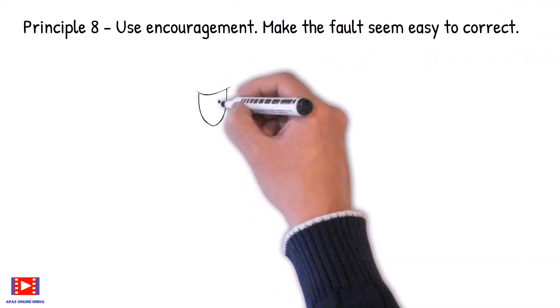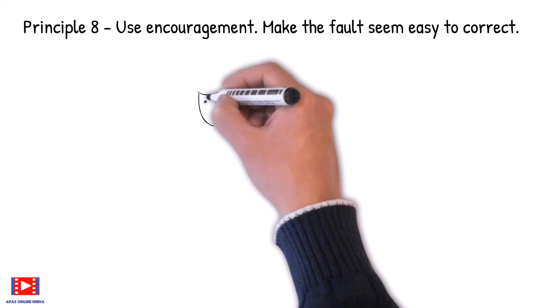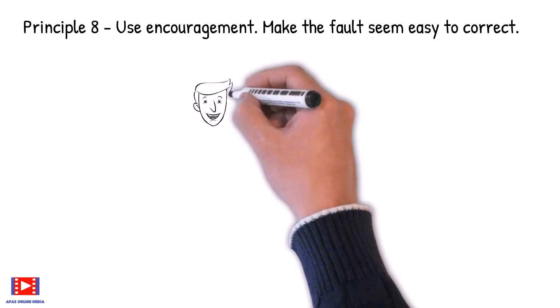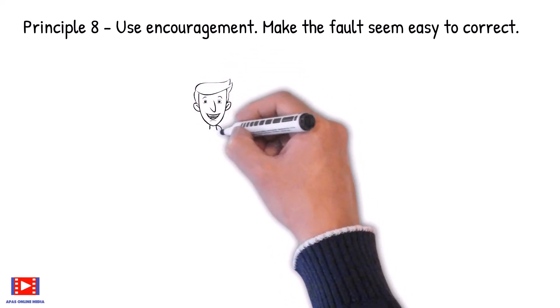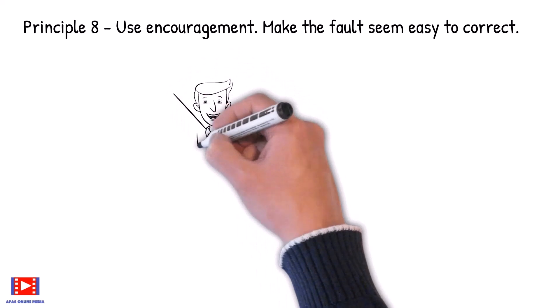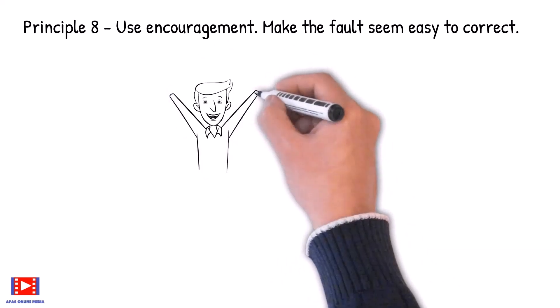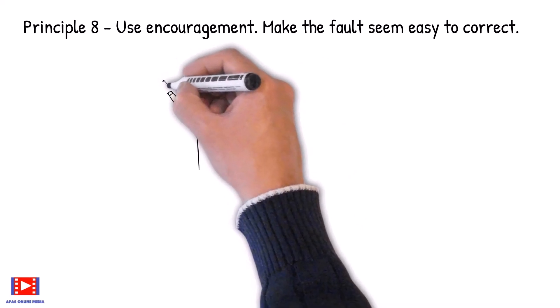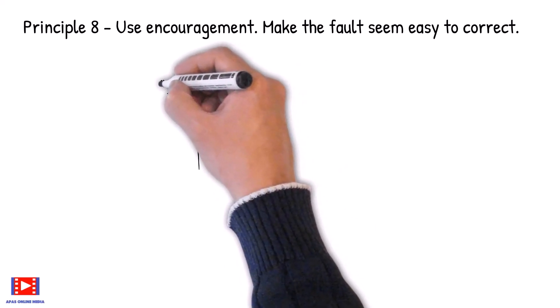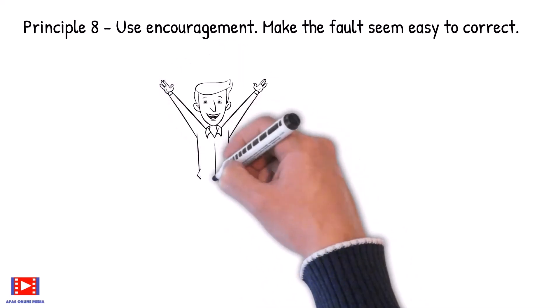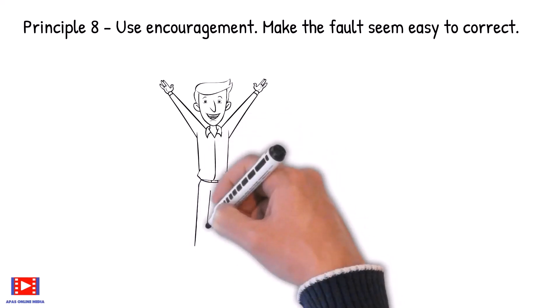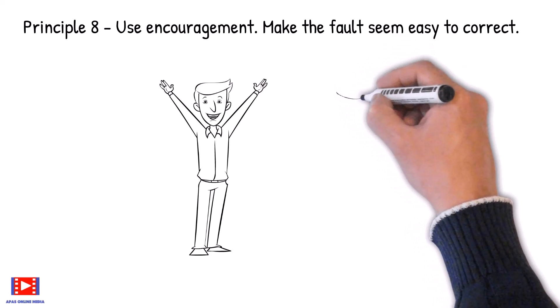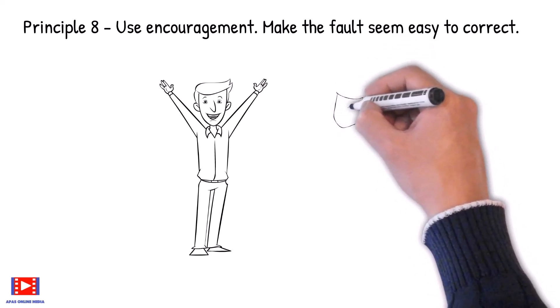Principle 8: Use encouragement. Make the fault seem easy to correct. Tell your child, your spouse or your employee that he or she is stupid or dumb at a certain thing, has no gift for it and is doing it all wrong, and you have destroyed almost every incentive to try to improve.